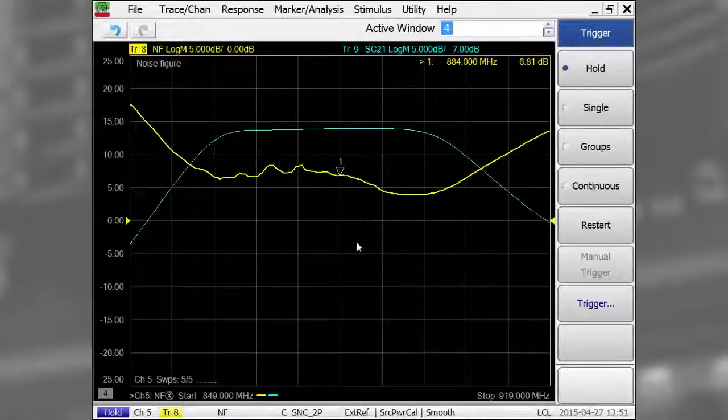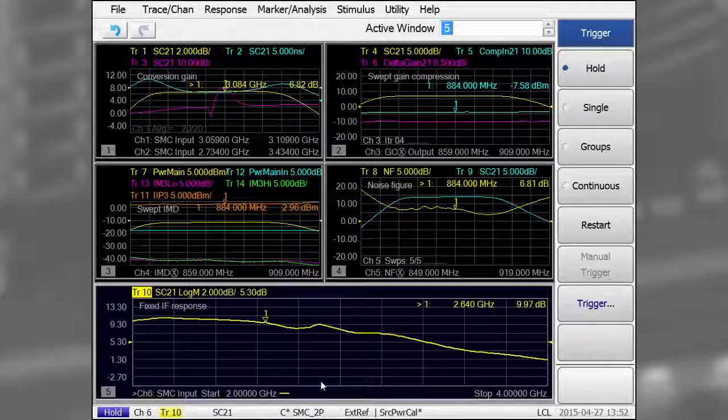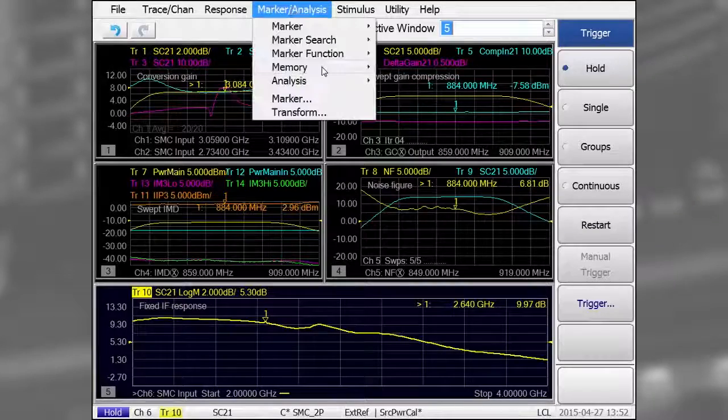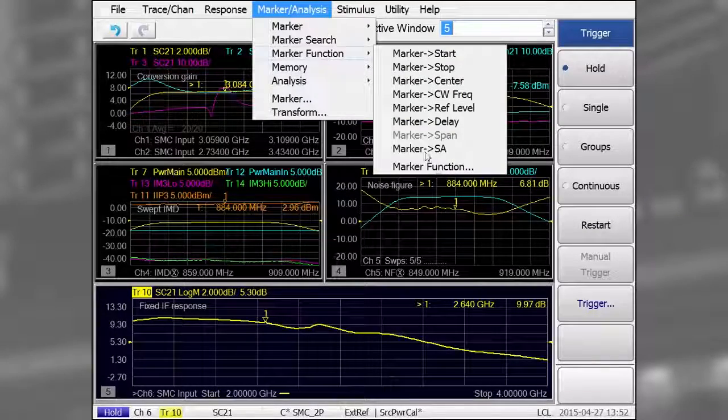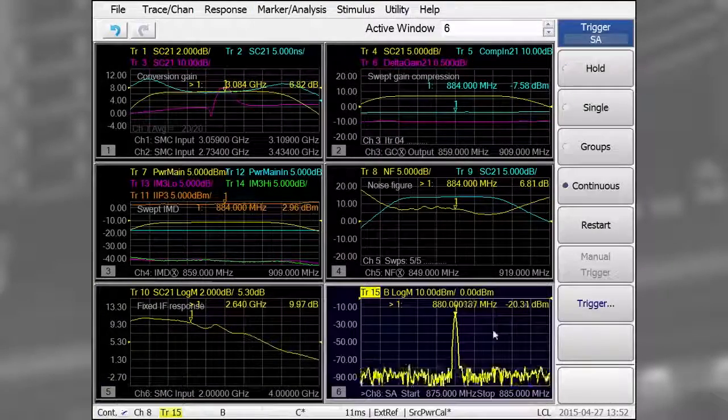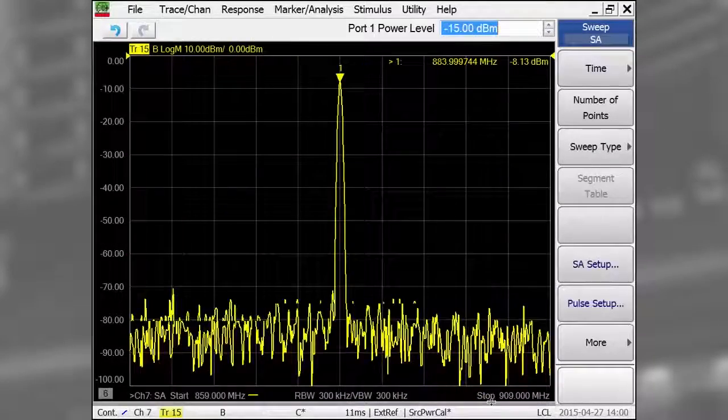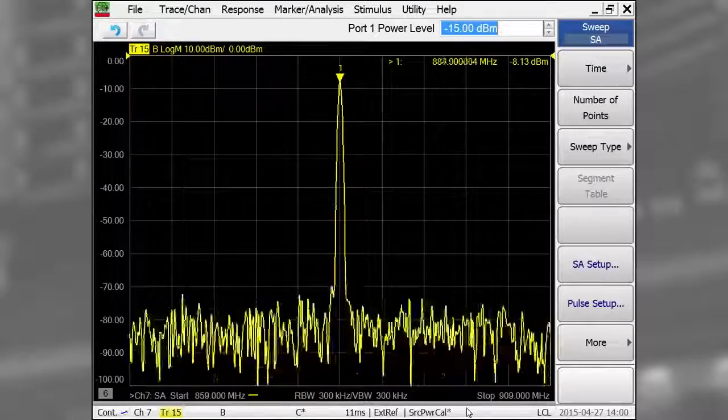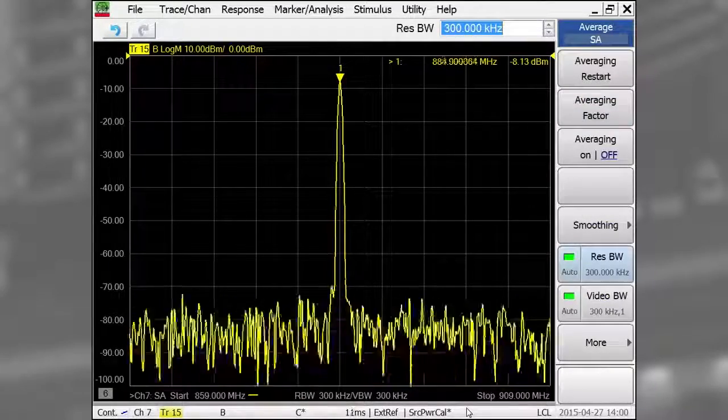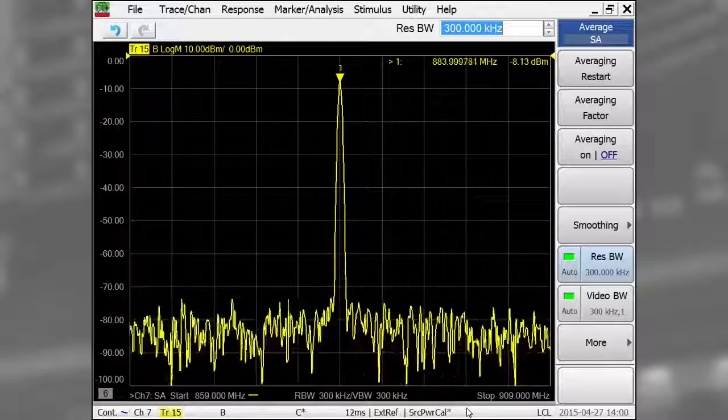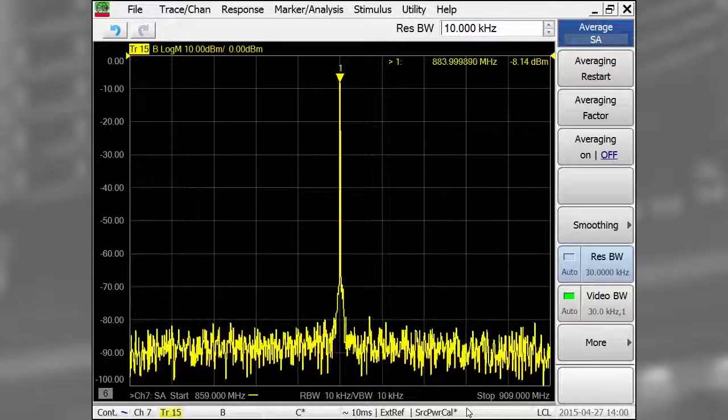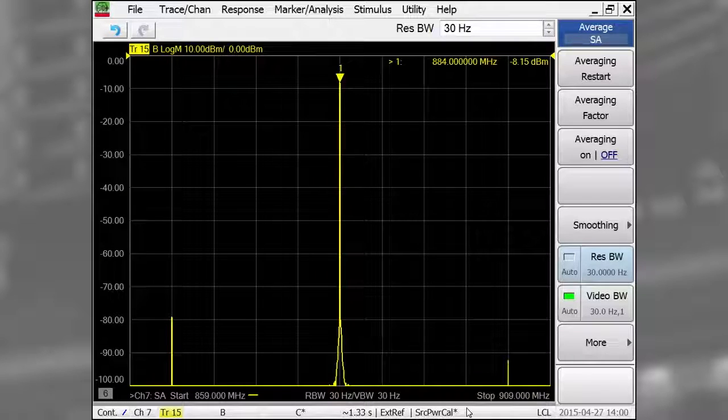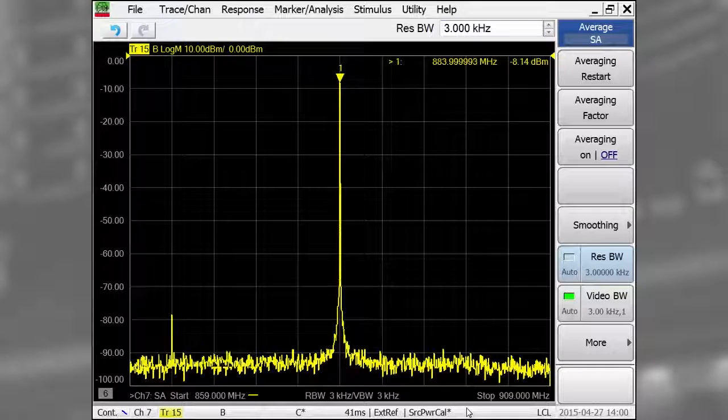Taking advantage of a feature called marker-to-SA, I can place a marker in the passband of the converter and open a spectrum analyzer channel that has the same stimulus conditions as those used in the noise figure channel. Now we see the output signal at 880 MHz with a 50 MHz span. Notice as I decrease the resolution bandwidth setting, I can maintain excellent sweep speed while improving measurement sensitivity.